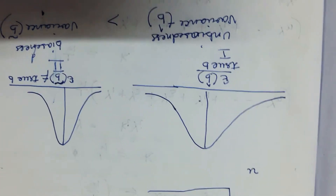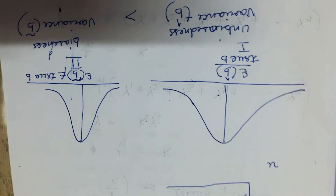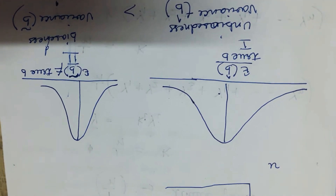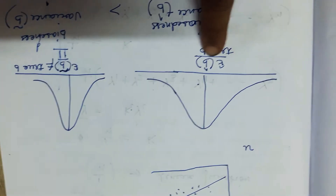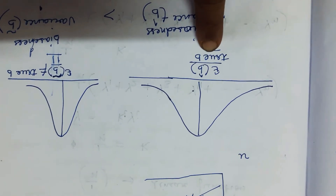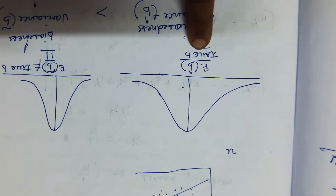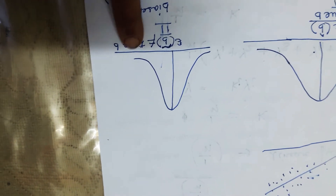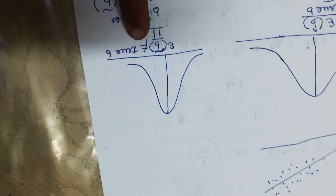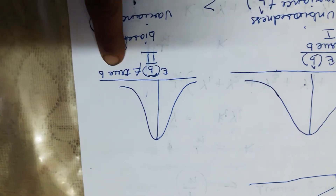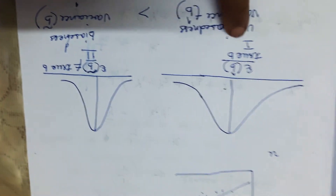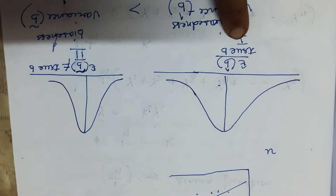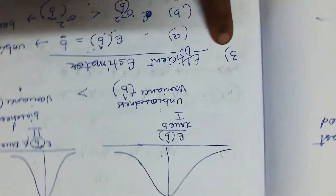It may be possible that an estimator is unbiased but does not possess the property of minimum variance. For example, in the case of the first diagram, the expected value of b equals the true value of b, but the variance is larger than in the second diagram. In the second diagram, however, the estimated value of b is not equal to the true value of b. So an estimator may have unbiasedness but not the best estimator property.